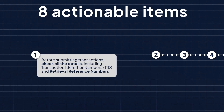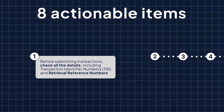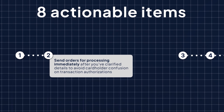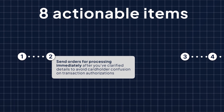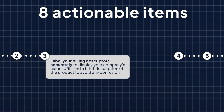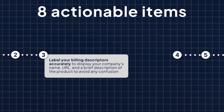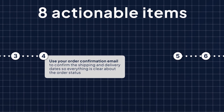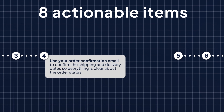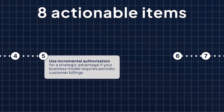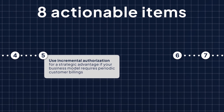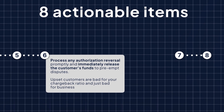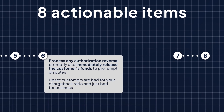Number one: before submitting transactions, check all the details including transaction identifier numbers (TID) and retrieval reference numbers. Number two: send orders for processing immediately after you've clarified details to avoid cardholder confusion on transaction authorizations. Number three: label your billing descriptors accurately to display your company's name, URL, and a brief description of the product to avoid confusion. Number four: use your order confirmation email to confirm the shipping and delivery dates so everything is clear about the order status. Number five: use incremental authorization for a strategic advantage if your business model requires periodic customer billings. Number six: process any authorization reversal promptly and immediately release the customer's funds to preempt disputes — upset customers are bad for your chargeback ratio and just bad for business.